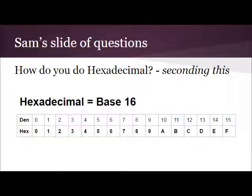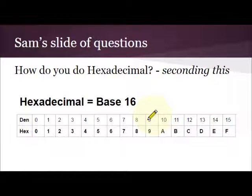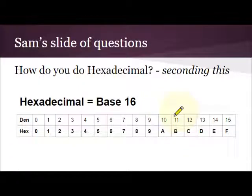Hexadecimal is basically a base 16 number system. Base 16 essentially means that it has 16 different types of digit in the number system. We use denary, which uses 0 to 9. Now if we need to get to 10, we have to combine two of our digits together. So 10 uses two digits, 11, 12, and so on. What we're doing is saying I've already counted to 9 once and now I'm into the tens.